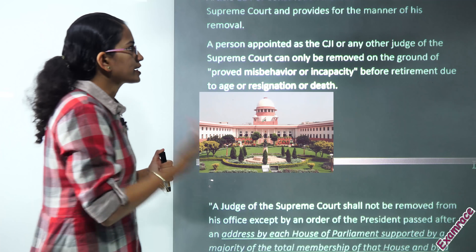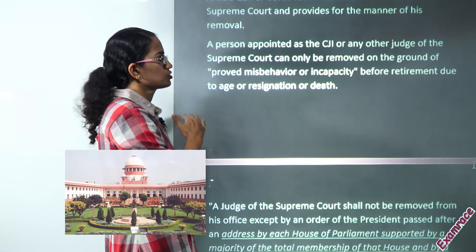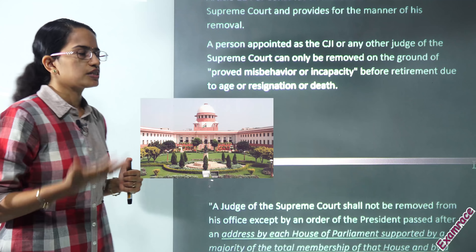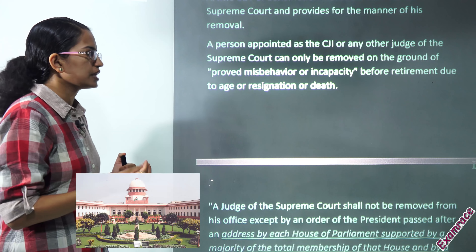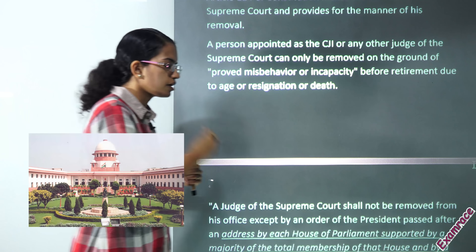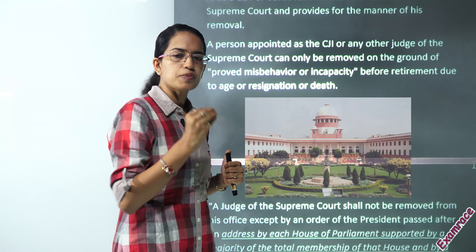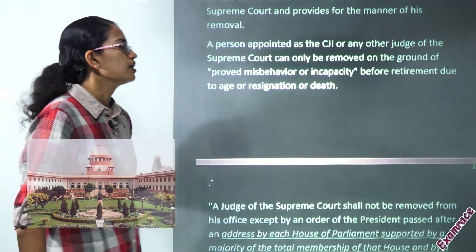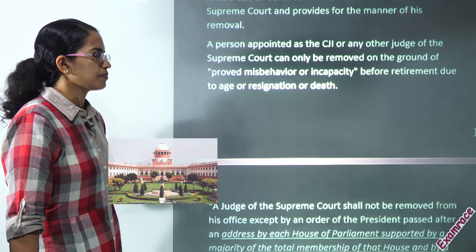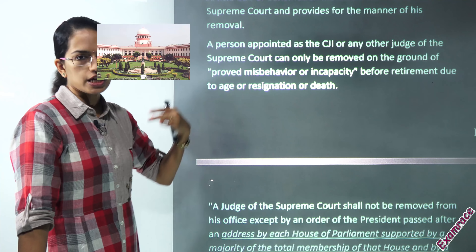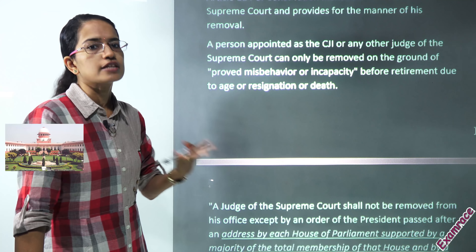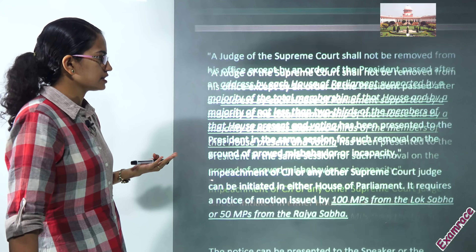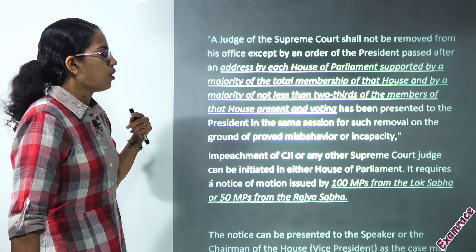In what case can the Supreme Court judge or the Chief Justice be impeached? He or she could be impeached on the charges of proven misbehavior or incapability before the age of retirement, death, or resignation.